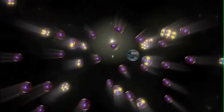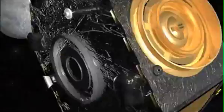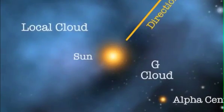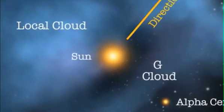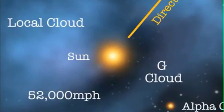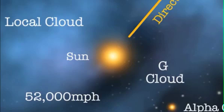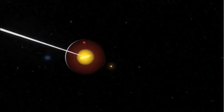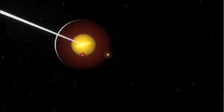The measurement of these atoms by IBEX has enabled scientists to get a better grasp on the environment around our solar system. The speed of the galactic wind registered around 52,000 miles per hour, which is about 12% slower than previously thought. At that speed, it still takes about 30 years for each atom to reach IBEX from the edge of the solar system.